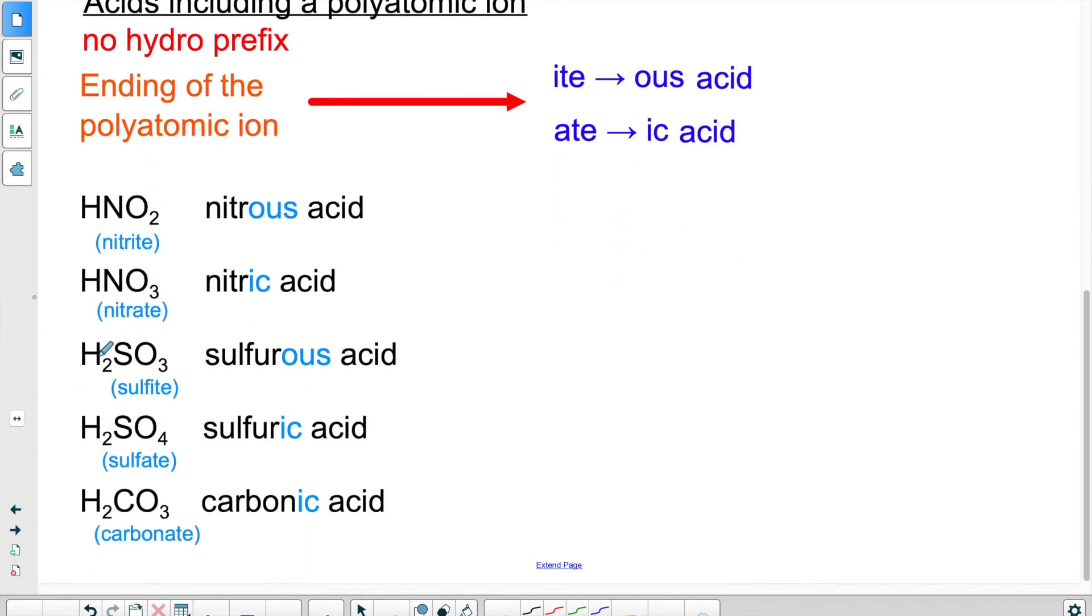Here we have H2SO3. Sulfite becomes sulfurous acid. Sulfate, SO4, becomes sulfuric because whatever ends in ATE now ends in IC for an acid. And the last one, CO3 is carbonate, the carbonate ion. Anything in ATE changes to IC, so it becomes carbonic acid.